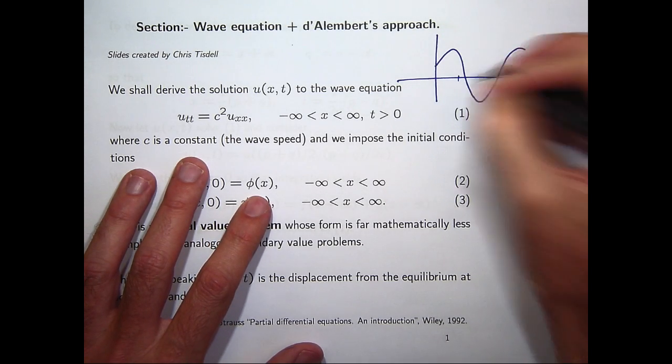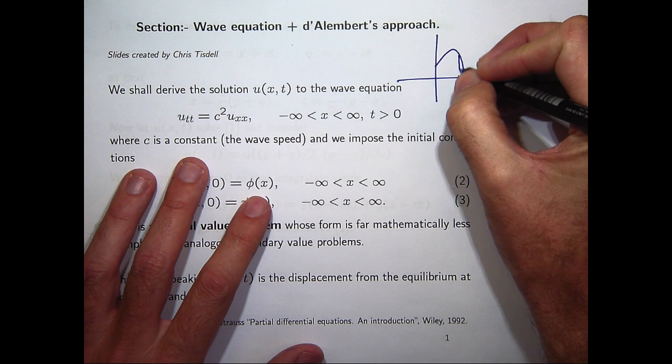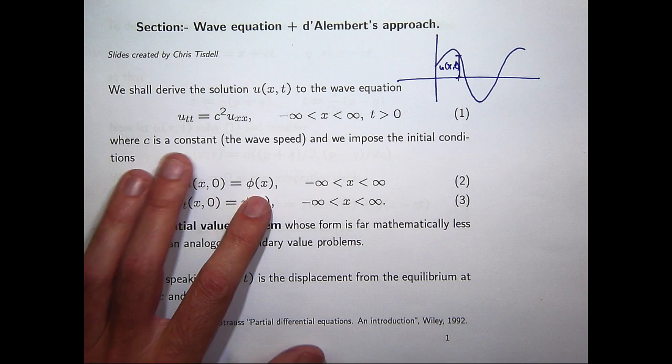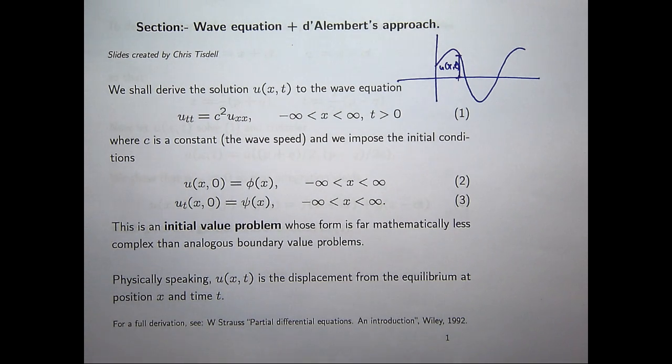So let's say I'm here, this distance here would be u of x t. So at some fixed t point, that would be the shape of the string.